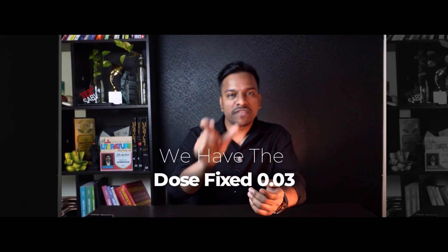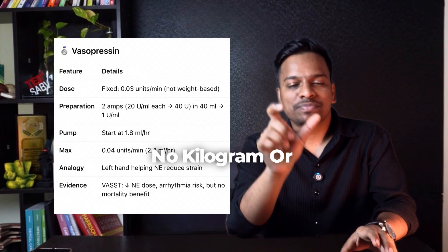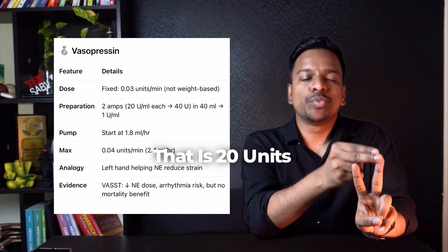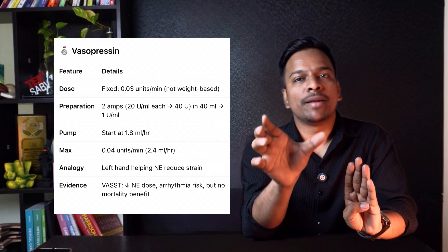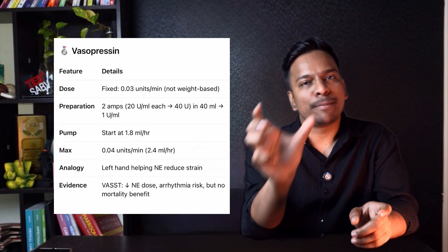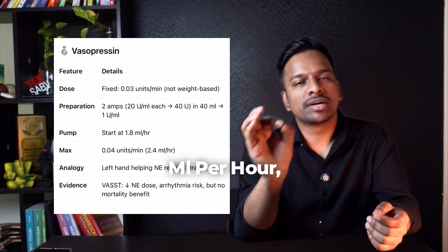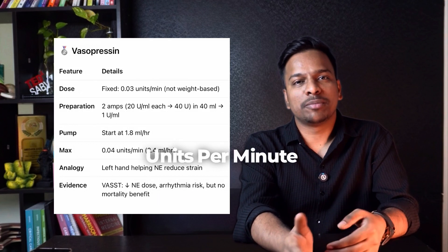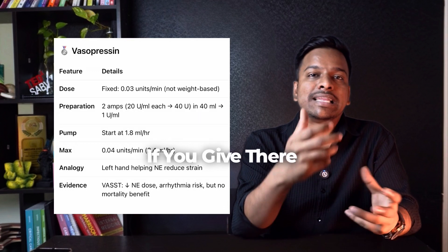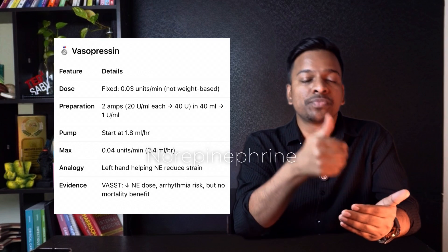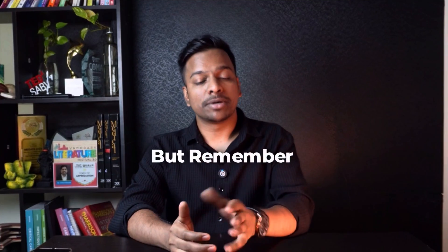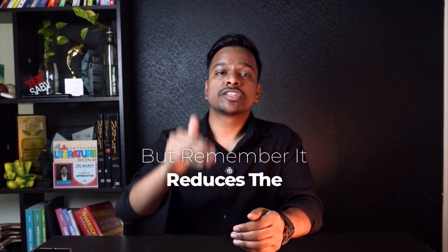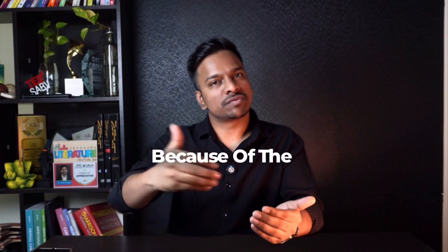The dose of vasopressin is fixed at 0.03 units per minute — no kilogram or body weight adjustment is required. For preparation, we use 2 ampoules of 20 units each, that becomes 40 units in 40 ml, so that becomes 1 unit per ml. You just start at 1.8 ml per hour, that gives you 0.03 units per minute. Maximum you can give is 0.04 units per minute — that is 2.4 ml per hour — beyond this there is ischemia risk. Vasopressin reduces the norepinephrine dose and that reduces the risk of arrhythmia due to tachycardia.